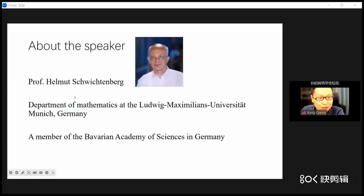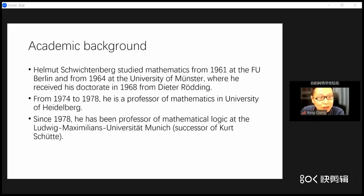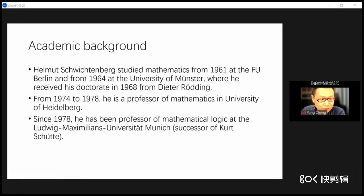Schwendberg is a professor in the Department of Mathematics at the University of Munich in Germany. He is a member of the Bavarian Academy of Science in Germany. Regarding his academic background, Schwendberg studied Mathematics from 1961 at the Free University of Berlin and from 1964 at the University of Manchester, where he received his doctorate in 1968 from Dieter Rodin. From 1974 to 1978 he was a professor of mathematics at the University of Hamburg, and since 1978 he has been Professor of Mathematical Logic at the University of Munich.